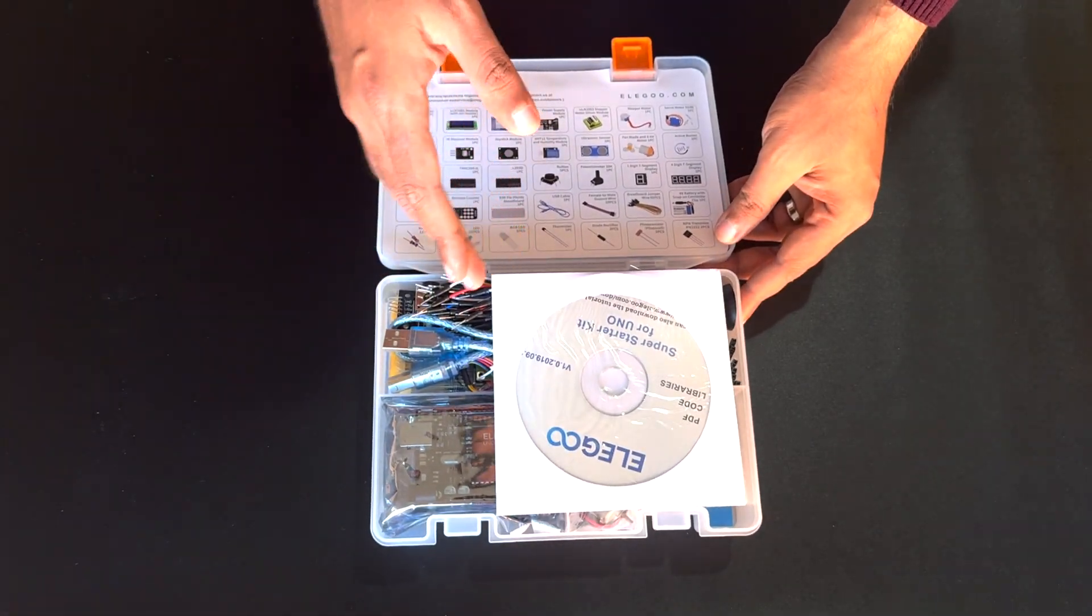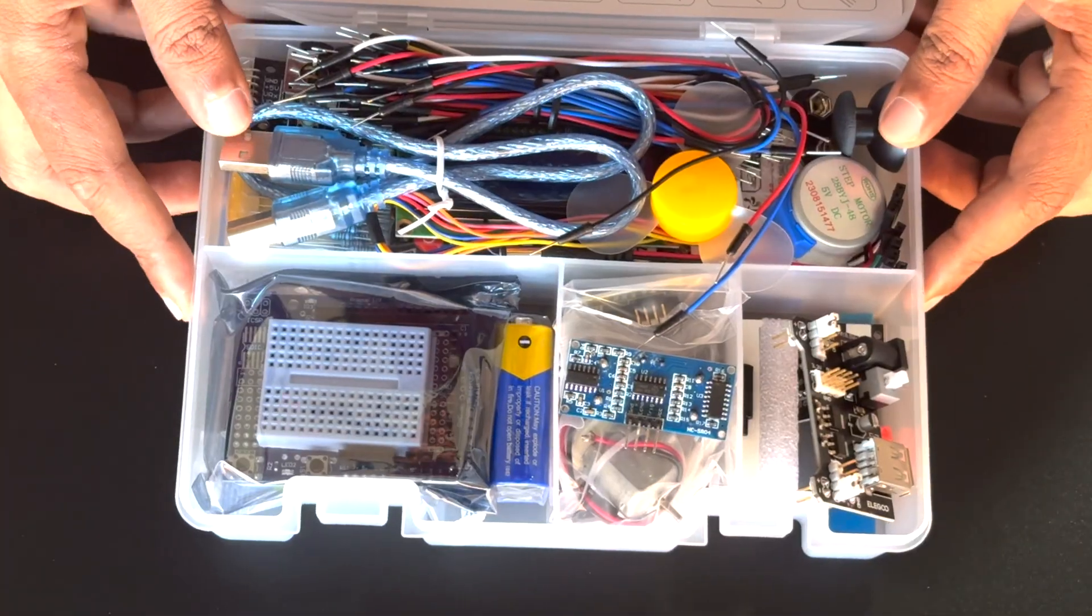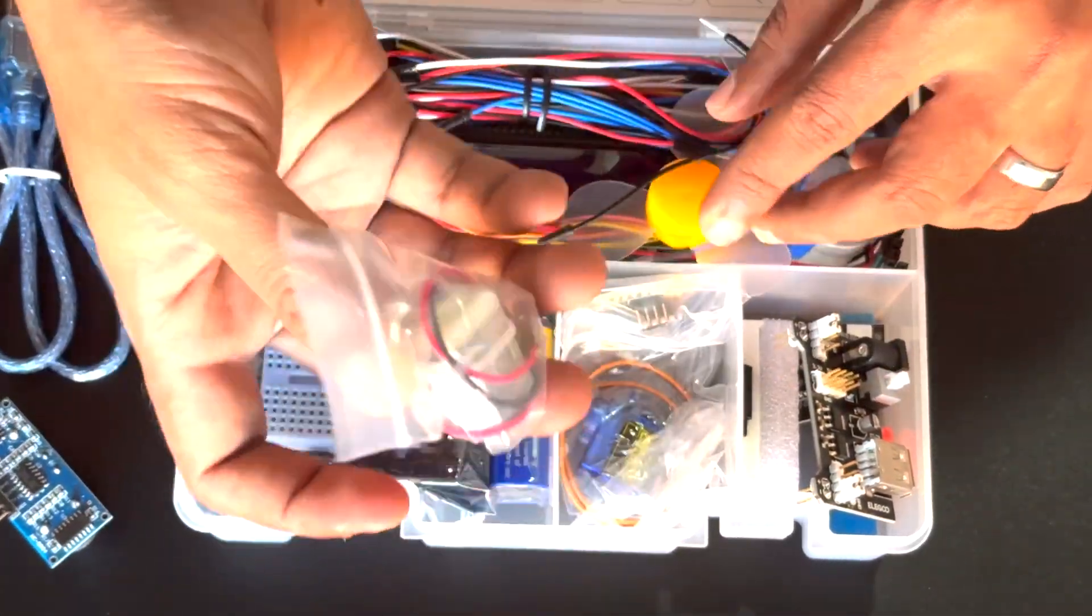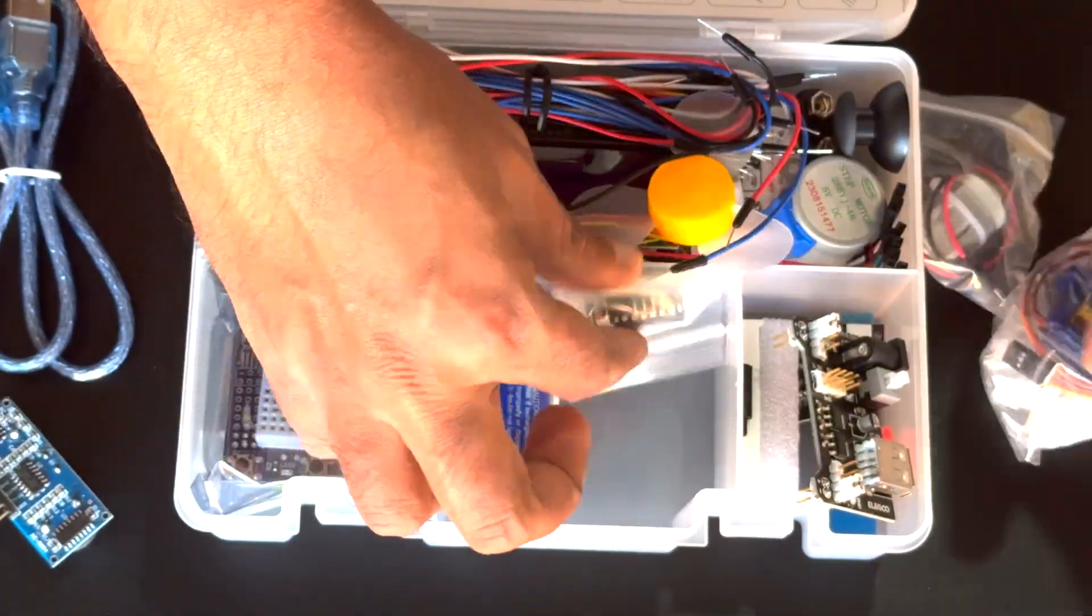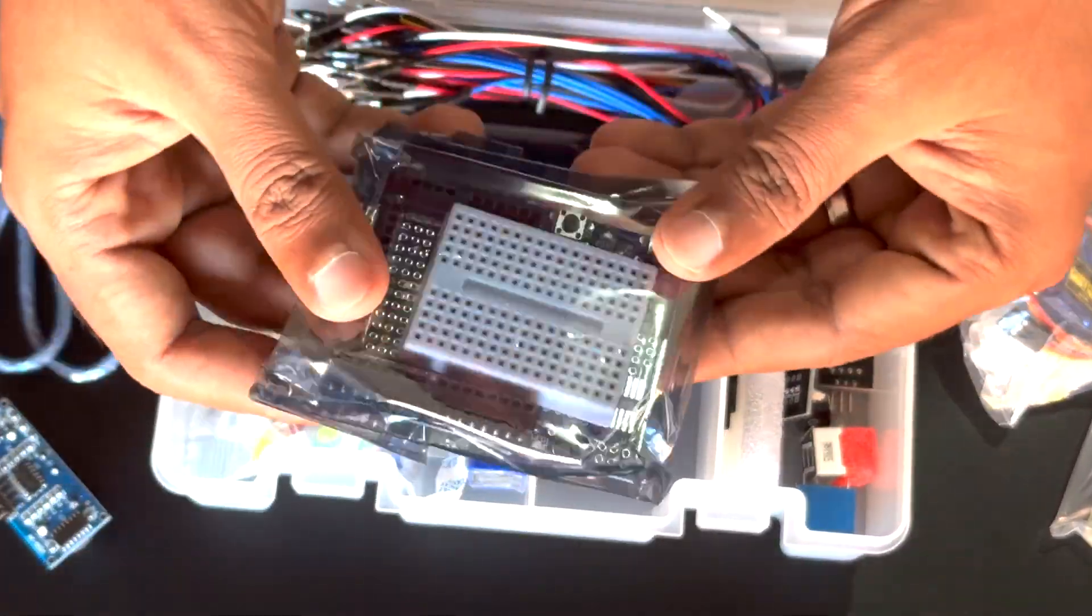First let's talk about what you get in this package. It's an all-in-one solution that includes everything you need to get started with your electronics journey. The kit is neatly organized in a well-designed box and inside you'll find a treasure trove of components and modules that will spark your creativity.